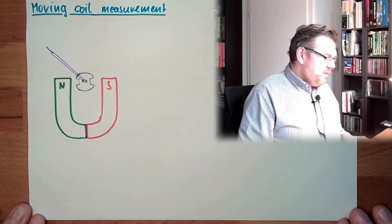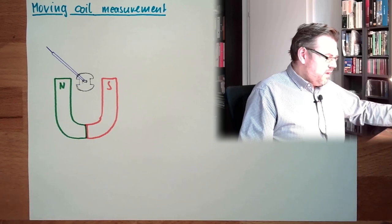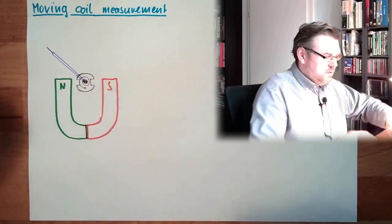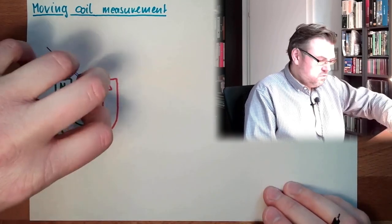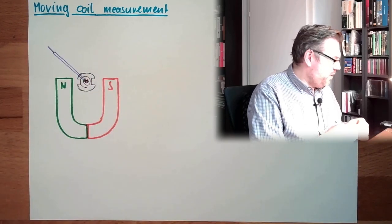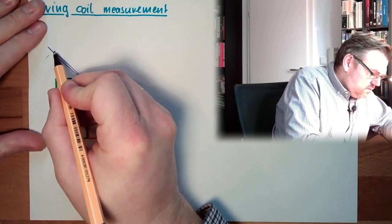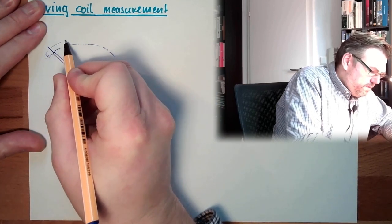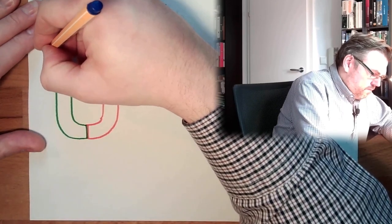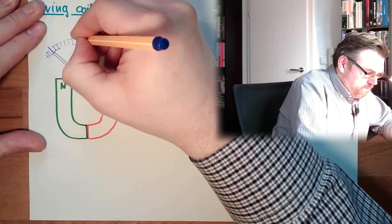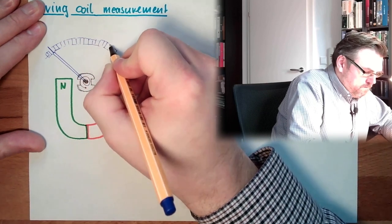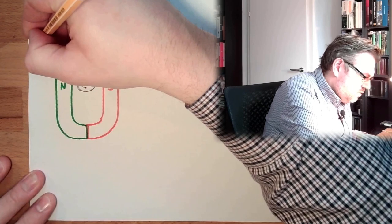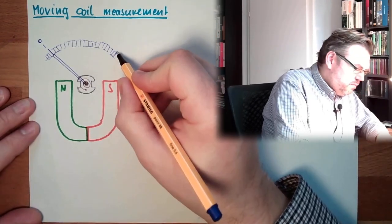What is holding the pointer in position is some spring. We have a rotary spring here somehow. This applies the torque in this direction, holding back the pointer. Here is the scale. The pointer is indicating at the scale. Here we have zero, and here we have the maximum measurement range, whatever this is.